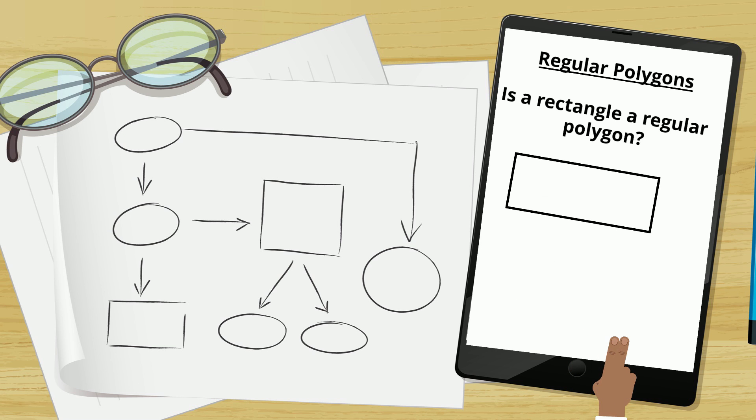Is a rectangle a regular or irregular polygon? Well, it would be an irregular polygon because all of its sides are not equal.